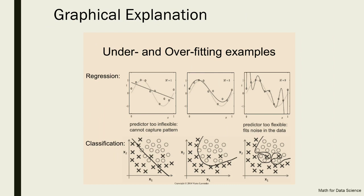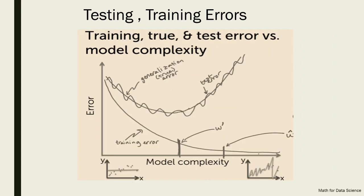Now let's look at some graphical explanation of overfitting. Think about at which region of the graph overfitting occurs. Overfitting means you are trying to accommodate each and every point of the data set in your model — that is the part where both training and testing errors increase a lot. Therefore, the further right you move on the graph, the more overfitted the model is.